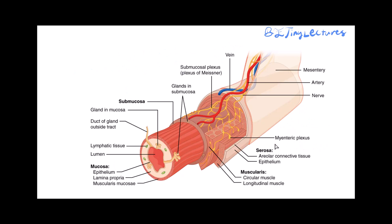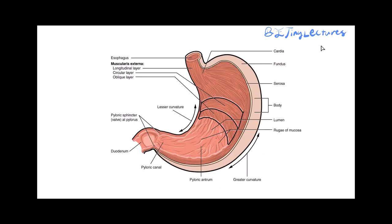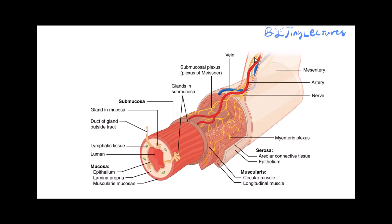On the outer layer we have the serosa — the tan outer lining you see on the stomach, large intestine, or small intestine. The serosa protects organs from irritation caused by rubbing against other organs as the stomach expands and contracts. You'll also notice the mesentery, which is a thin film that covers and holds organs in place, like a plastic bag keeping all the organs from touching or rubbing against each other.